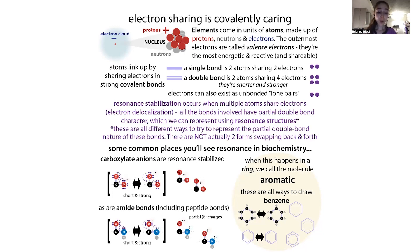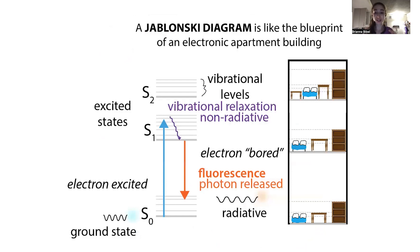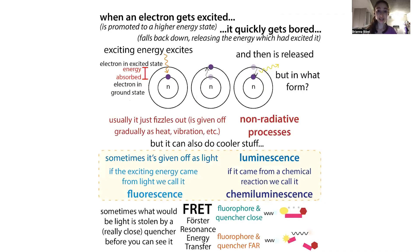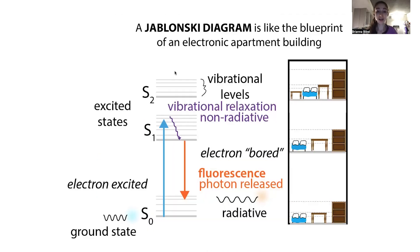When atoms are sharing their electrons, those electrons are housed in different energy states. We can represent these with a Jablonski diagram — think of it like the blueprint of an electronic apartment building. There are specific energy states that electrons can occupy, but they can only occupy those specific states. They can't live in between the ground state or a more excited state.